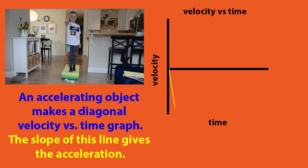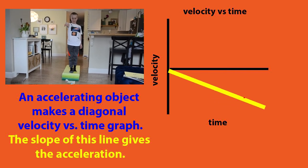And the velocity versus time graph for accelerated motion, this one is going to be a diagonal line. This object was going down, so it's diagonally downwards, it's sloping downwards here.